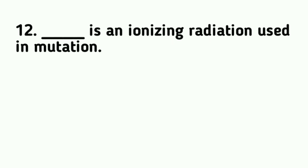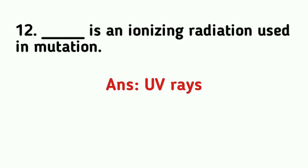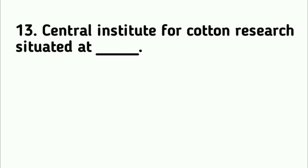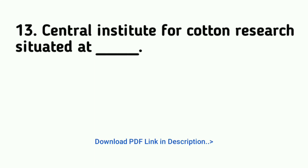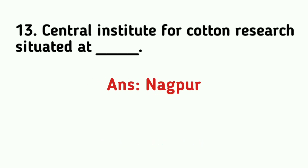Ultraviolet rays are non-ionizing radiation used in mutation, whereas X-rays are ionizing radiation used in mutation. The Central Institute for Cotton Research is situated at Nagpur.